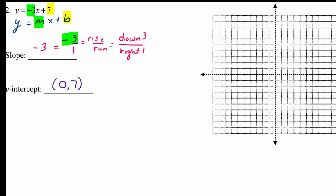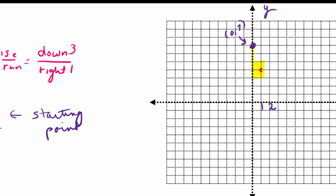The y-intercept is your starting point, and then you use your rise over run — your slope — to find more points. Assuming a scale of 1, we find (0, 7) — that's our starting point. From (0, 7), we go down 3 and to the right 1, which puts us at a new point. We repeat the process: down 3 and right 1 again, putting another point. Then down 3 and right 1 once more.